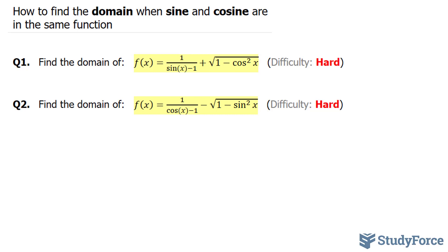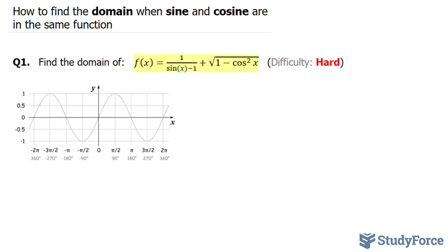The first question reads: find the domain of the function f(x) = 1/(sin(x)-1) + √(1-cos²x). To give a visual of what sine looks like, I've included this wave function of sine, and we'll separate this function into two terms. We have this first term and we have the second term.